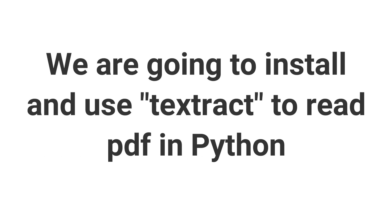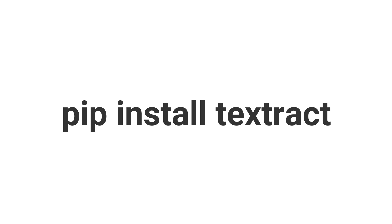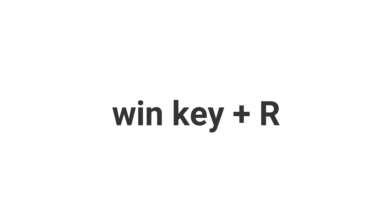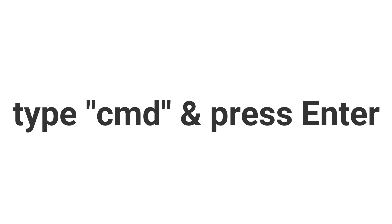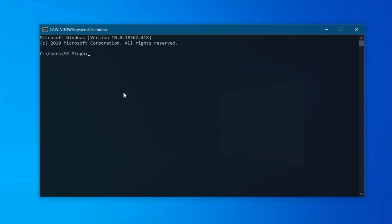Hello friends, we are going to install and use Textract to read PDFs in Python. Let's start with the code. We will open the command prompt — you can press the Windows key plus R, type 'cmd', and press Enter. Then you can type the install command — copy the link from the description and paste it in the command prompt.